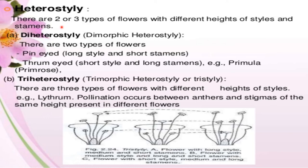Dimorphic heterostyly has two types of flowers: pin-headed (long style and short stamen) and thrum (short style and long stamen). Example is Primula (primrose). Trimorphic heterostyly has three types of flowers with different heights of style. Legitimate pollination occurs between anther and stigma of the same height present in different flowers.